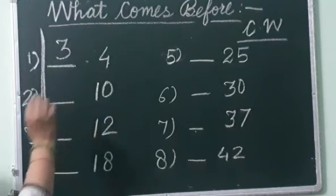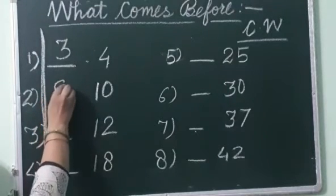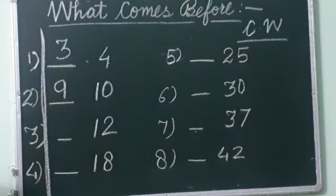Now look, it's 10. Start counting till 10: 1, 2, 3, 4, 5, 6, 7, 8, 9, 10. What did you say before 10? Just before 10? You said 9. So you have to write here 9.